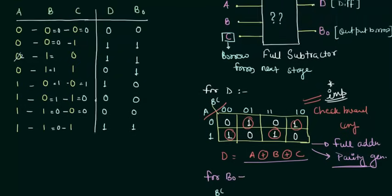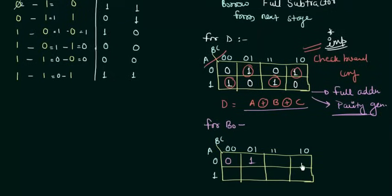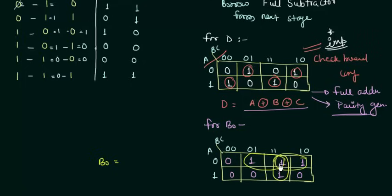Now filling the KMAP for the borrow output BO: the values are 0,1,1,1 in the first row and 0,0,0,1 in the second. We form three groups of two ones each. The first group gives BC, the second gives A'C, and the third gives A'B. Therefore, the borrow output BO = BC + A'C + A'B.